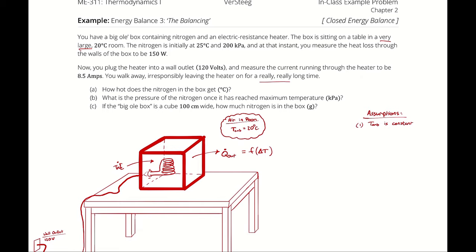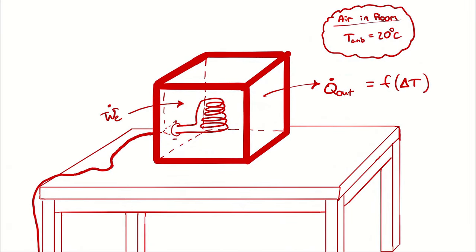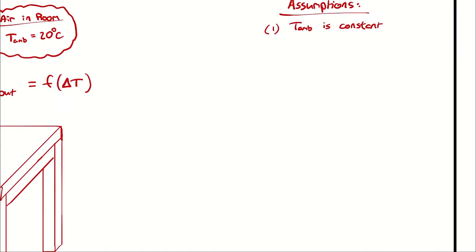Next question: is this an open system or a closed system? I am defining my system as the mass of nitrogen in the box, and I wasn't told enough information to deduce that there is any nitrogen entering or leaving the box. Therefore I am calling this a closed system.